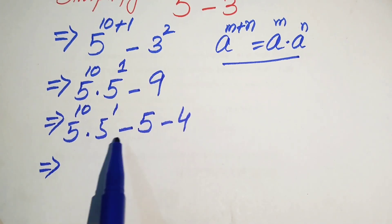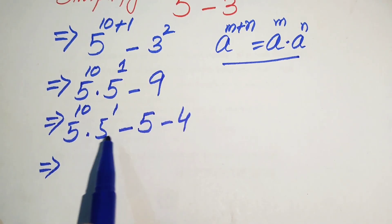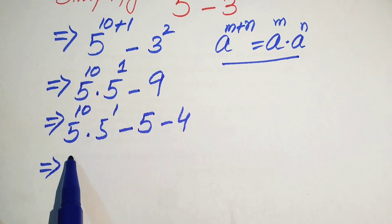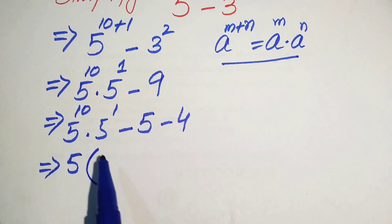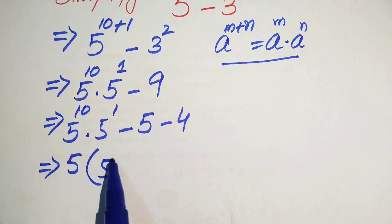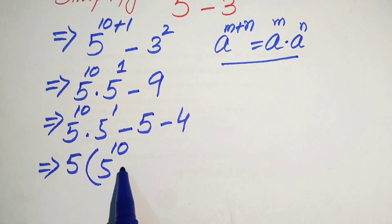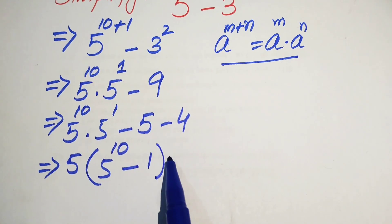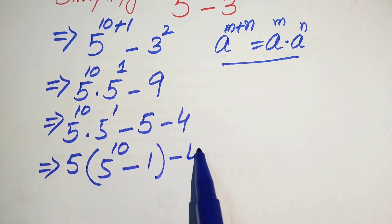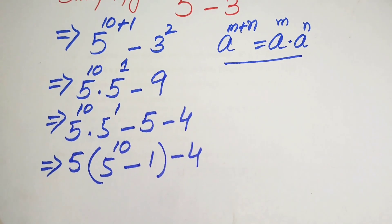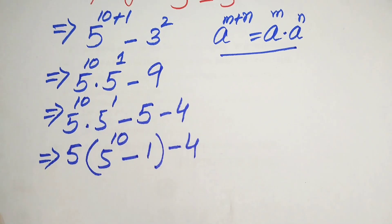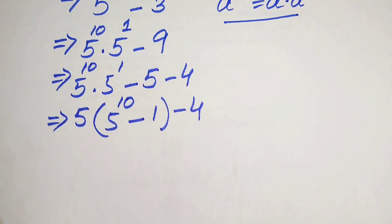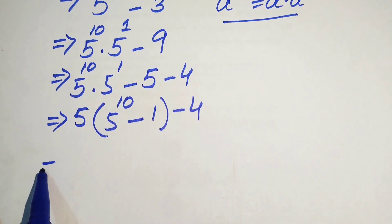We see that 5 is the common term in the first two terms, so we factor it out. The remaining terms give us 5 times the quantity 5 to the power of 10 minus 1, and this is minus 4.